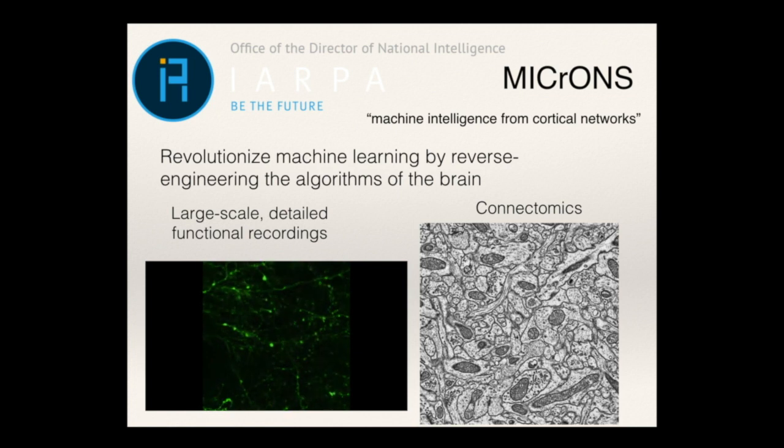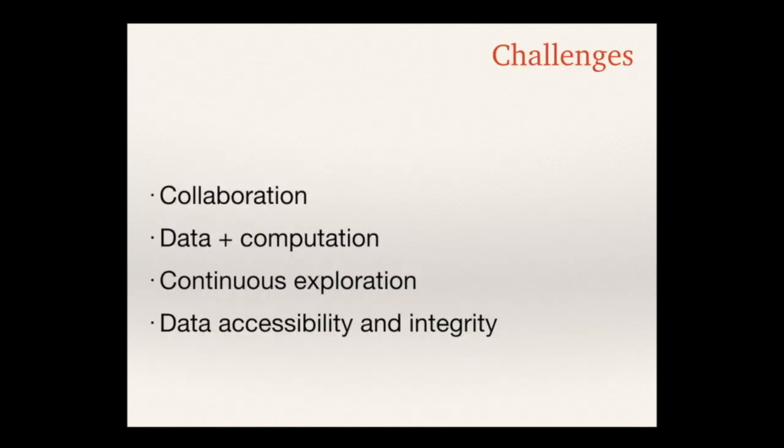It includes a lot of experiment, analysis, and modeling. These are the challenges that DataJoint helps address most effectively compared to other solutions: collaboration, data and computation, continuous exploration, and data accessibility and integrity. It's still very common in many labs where each member does their own work, guards their data, and sharing means posting it somewhere at the end. But more commonly, there is separation of labor between members of the same lab or even between multiple labs. Immediate and concurrent access to the same data becomes very important.